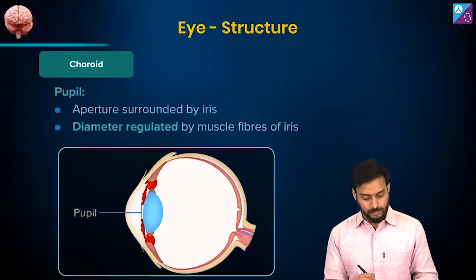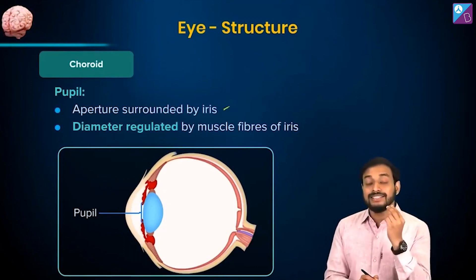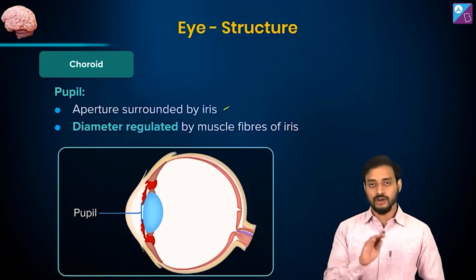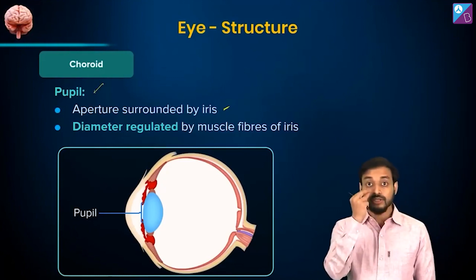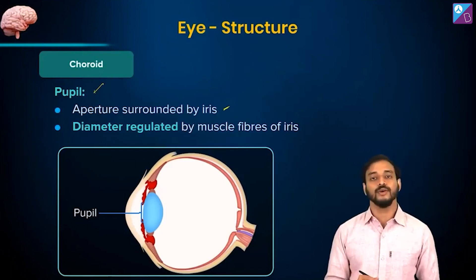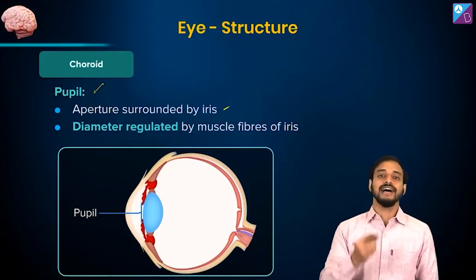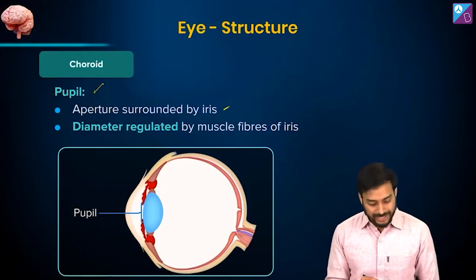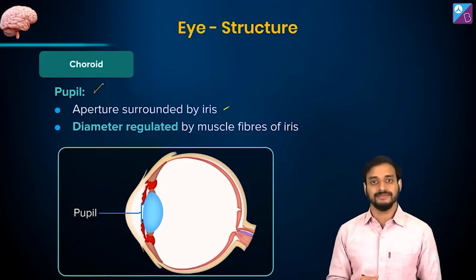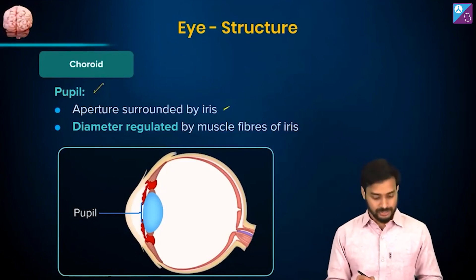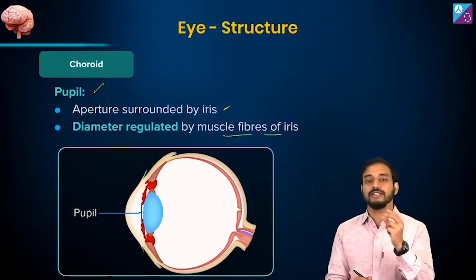What about the pupil? The pupil is the aperture which surrounds the iris, and its diameter can be regulated. Take a dark room, stand in front of a mirror, and quickly flash a torchlight — you'll see the pupil moves. If you flash the light, it will become smaller. The function is to regulate the amount of light allowed inside the eyes so that proper vision is possible. When light intensity is low, the pupil becomes bigger. The diameter is regulated by the muscle fibers of the iris.